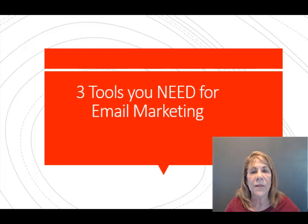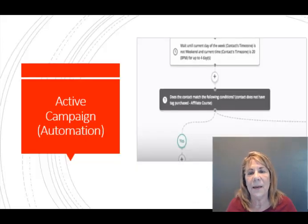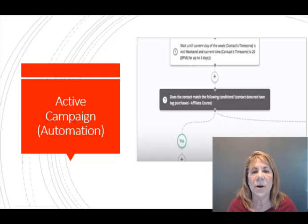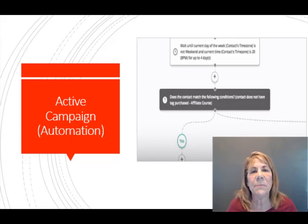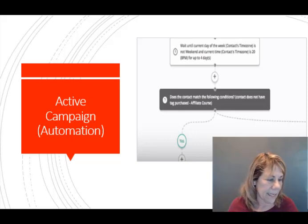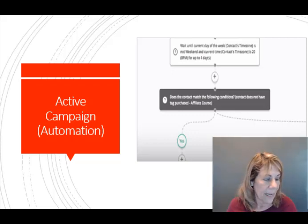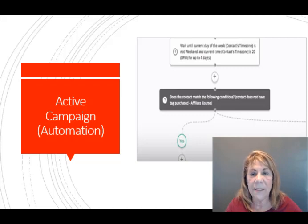That's what we're going to go over today. The first tool that you need is an autoresponder. I have two here that I like to use. One is called Active Campaign. Active Campaign is really nice because it automates your campaign or your sequence and it thinks for you, if that makes sense. It has really good deliverability rates, is very easy to use, and it automates.